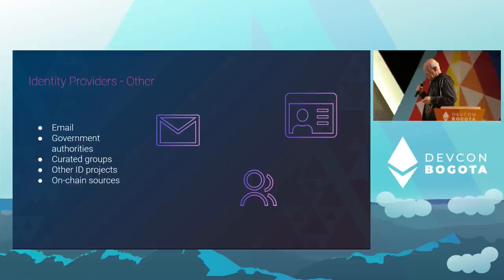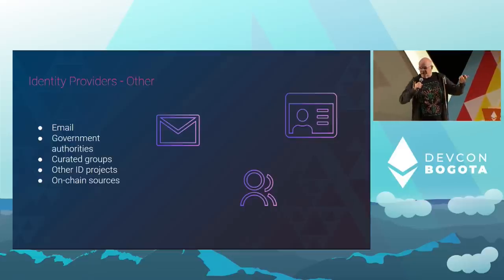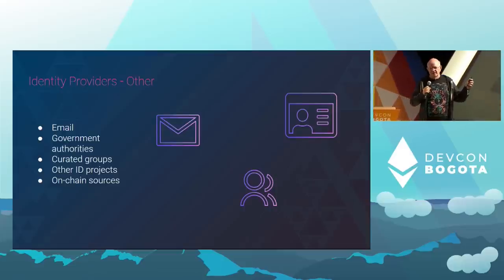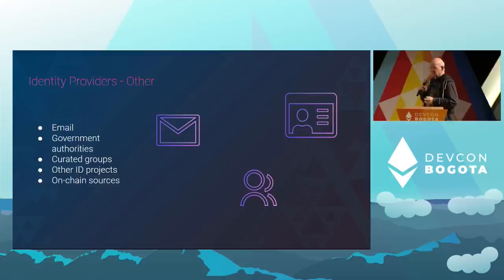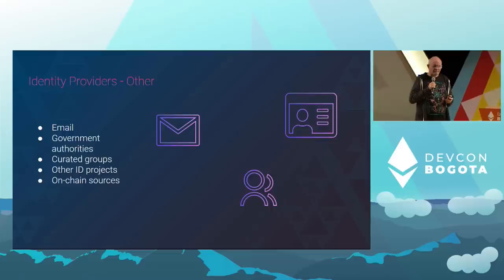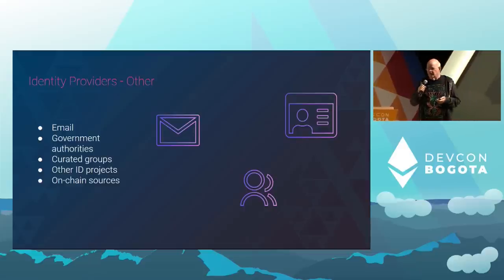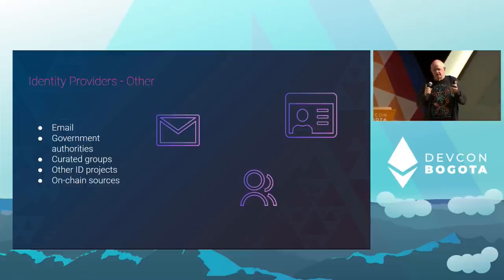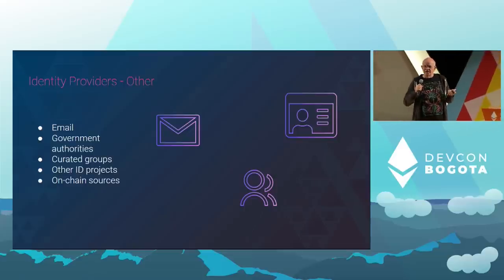Government authorities are good in that the government makes sure you only have one driver's license, and there's a strong guarantee there's a human behind it. This also includes people who don't use social media. We can also do things like curating groups of users based on personal knowledge of the individuals involved — that's a strong way to guarantee humanity. We can integrate with other ID projects and on-chain sources like NFT ownership.